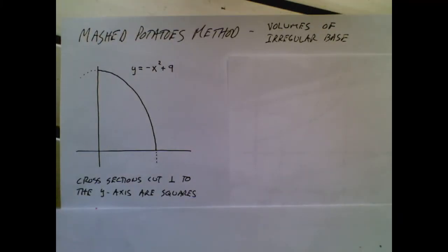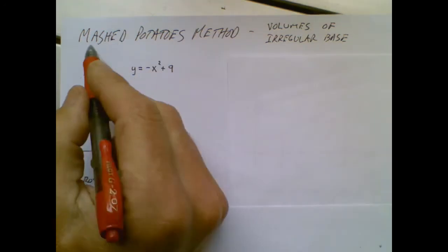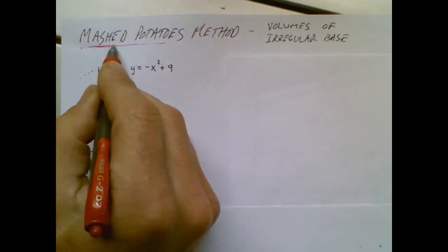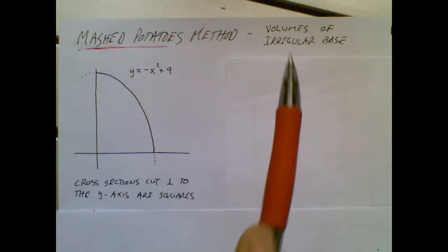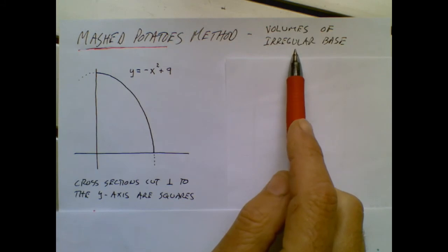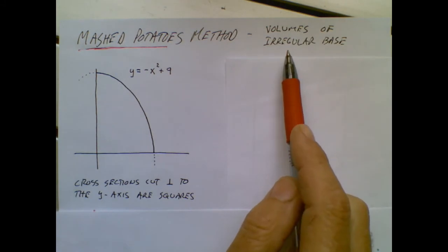Another volume method named after a food. I'm going to call this the mashed potatoes method. If you look this up in a calculus book or a YouTube video, the calculus people are probably calling this volumes of the irregular base.